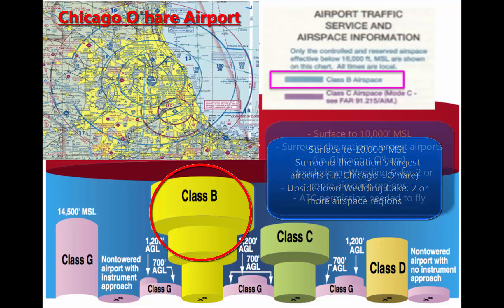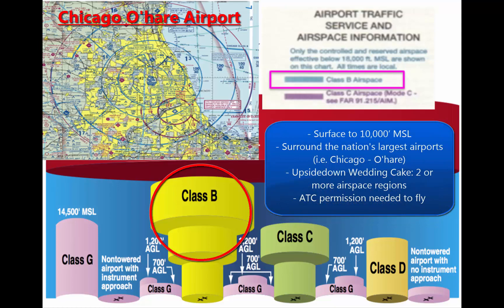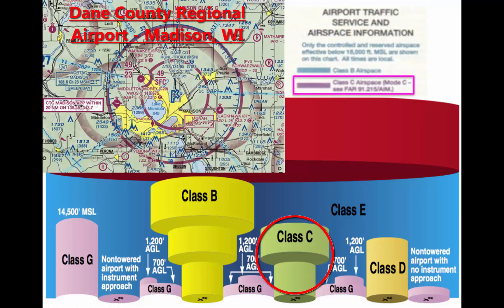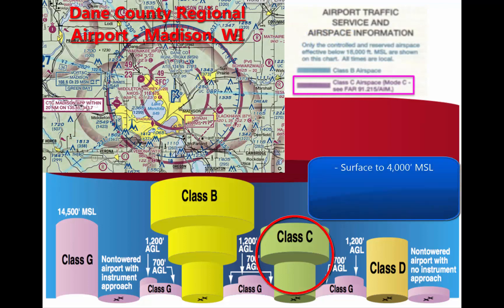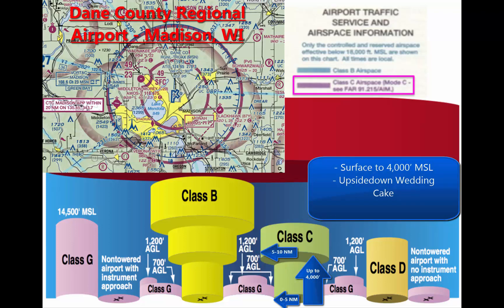All pilots must have air traffic control's permission to operate in Class B airspace. Class C airspace is generally airspace from the surface to 4,000 feet above the airport elevation around an airport with an operating control tower, serviced by a radar approach control, and having a certain number of IFR operations or passenger emplanements. These airspaces are also individually tailored, but generally are 5 nautical miles from the airport to 4,000 feet, and a ring from 5 to 10 nautical miles that exists from 1,200 feet to 4,000 feet above the airport elevation. Every aircraft in the airspace must maintain two-way radio communication with air traffic control.